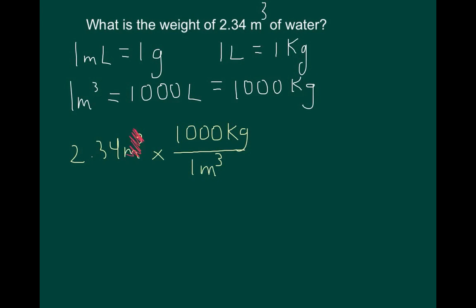Because we have meters cubed on the top and the bottom, we can now cross them off. This is the proper mathematical way of doing it. 2.34 times 1,000 kilograms equals 2,340 kilograms. So that's mass.